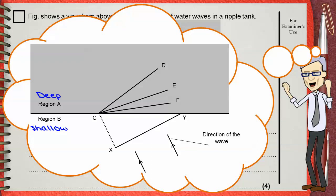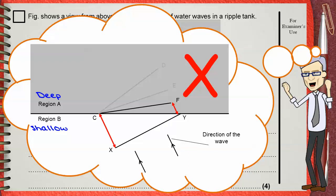Let's examine each of the three new positions, starting with CF. Part X of the wave will move towards C, and in the same time part Y will reach F. This means the wave would be slower from end Y and faster at end X — meaning the wave is slower in the deep region from Y to F than in the shallow region from X to C. This is wrong, so CF is an incorrect new position for XY.